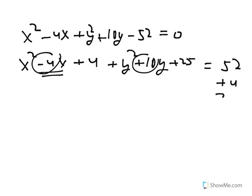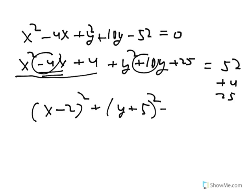But you have to add those to the other side also. Let's turn these each into perfect square trinomials, which can be factored. And 52 plus 4 is 56, plus 25 is 81. If you want to write that as 9 squared, you can.